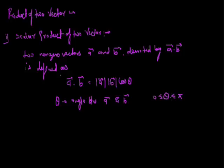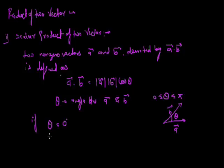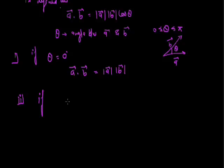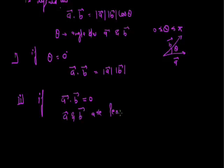The angle θ lies between 0 and π. If θ = 0°, meaning a and b are overlapping, then a·b = |a||b|. The second condition: if a·b = 0, this is possible if and only if a and b are perpendicular to each other.